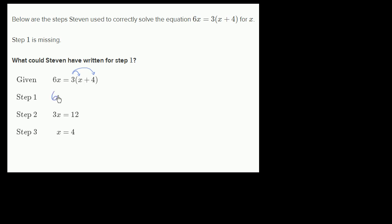So if we do that, we would get 6x is equal to, we haven't changed the left-hand side, and the right-hand side, 3 times x is 3x, and then 3 times 4 is 12. So you get 6x is equal to 3x plus 12.